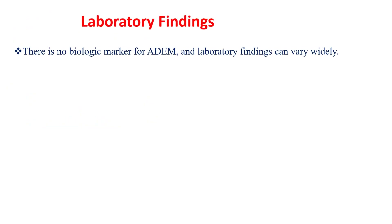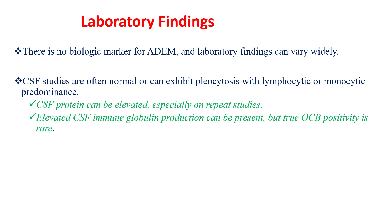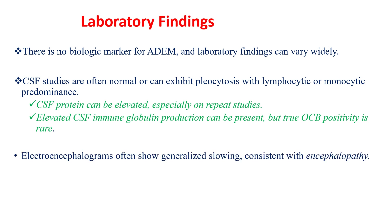There is no biological marker for ADEM, and laboratory findings can vary widely. CSF studies are often normal or can exhibit pleocytosis with lymphocytic or monocytic predominance. CSF protein can be elevated, and elevated CSF immunoglobulin production can be present. Electroencephalograms often show generalized slowing consistent with encephalopathy.